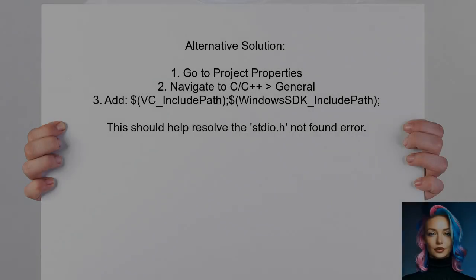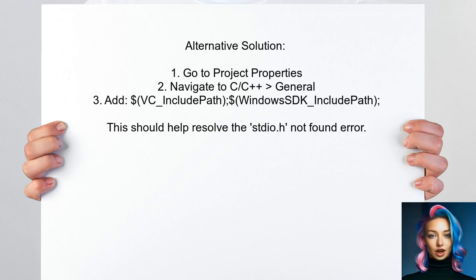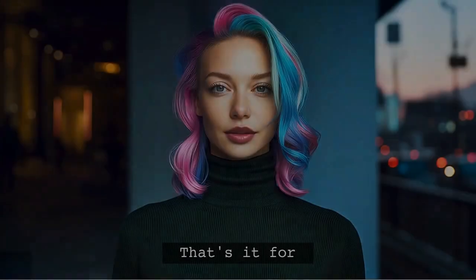An alternative solution from another user suggests a quick fix for the include file error. They recommend adding the paths for VC include and Windows SDK include into the project properties. Specifically, navigate to C/C++ settings, then General, and finally Additional Include Directories.